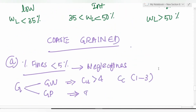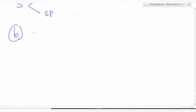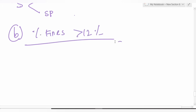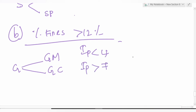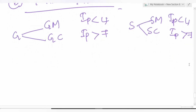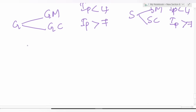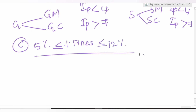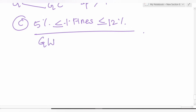If percentage fines > 12%: for gravel, GM if Ip < 4 and GC if Ip > 7; for sand, SM if Ip < 4 and SC if Ip > 7. If percentage fines is between 5% and 12%, dual symbols are used: GW-GM, GW-GC, GP-GM, GP-GC, SW-SM, SW-SC, SP-SM, SP-SC.